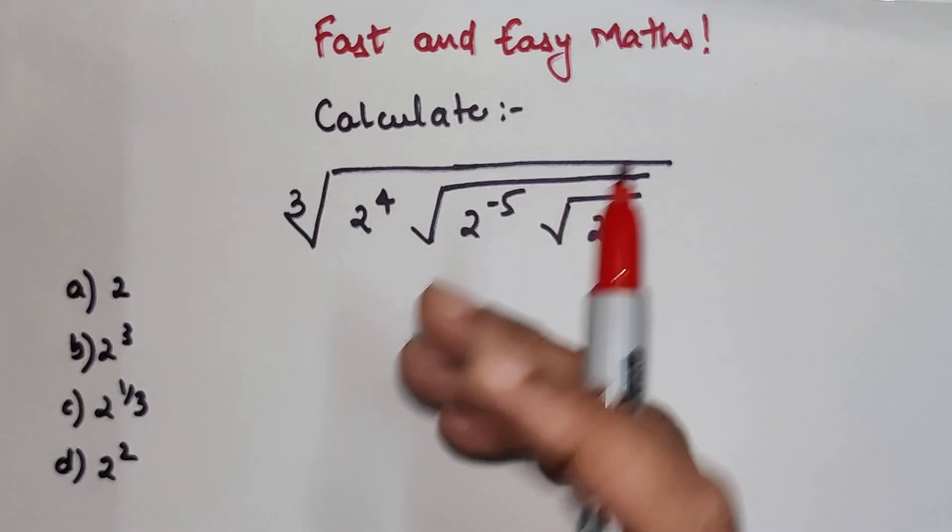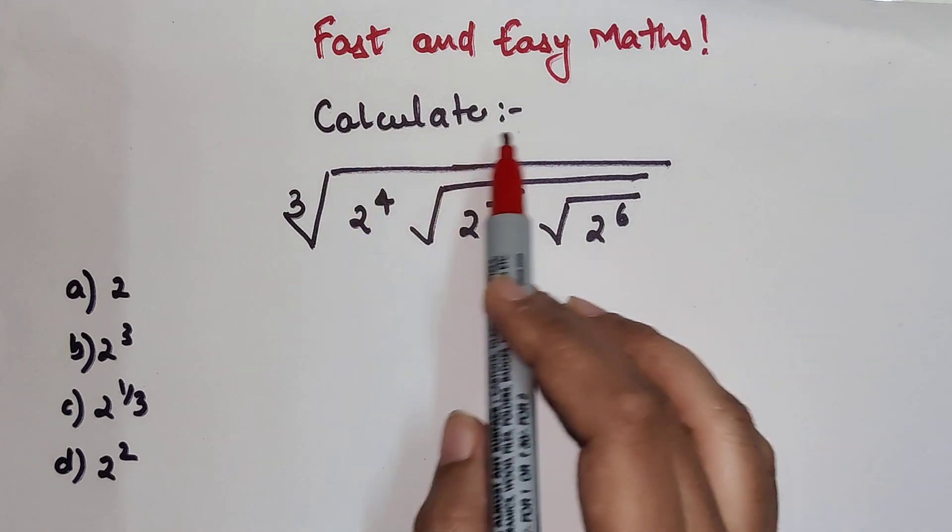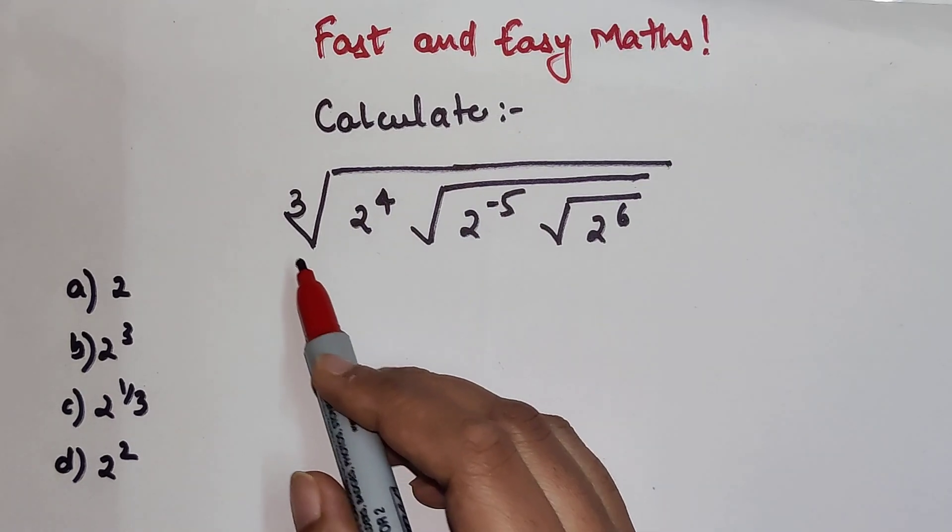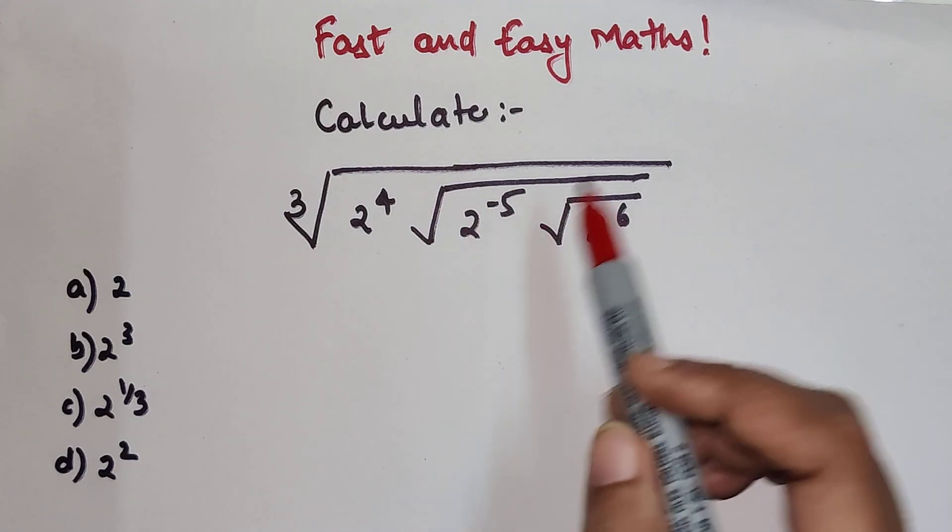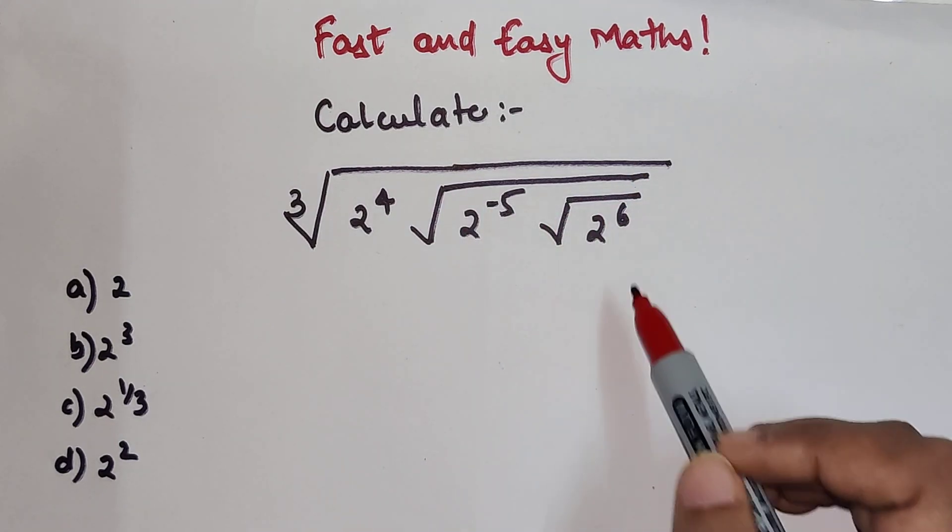So students, today we are going to do an indices problem which is we have to calculate. Now here we have cube root of 2 raise to 4, then we have a square root of 2 raise to minus 5, and then we have a square root of 2 raise to 6.